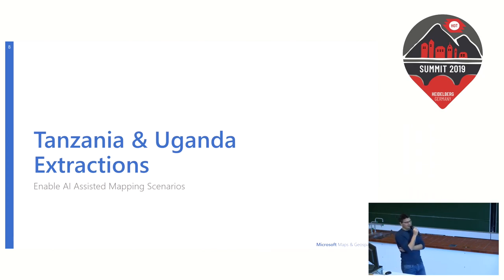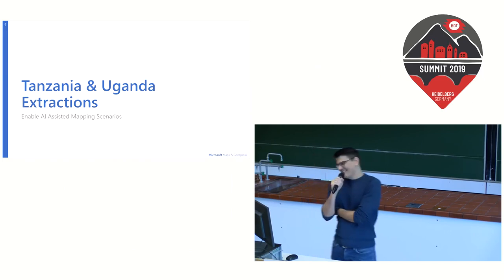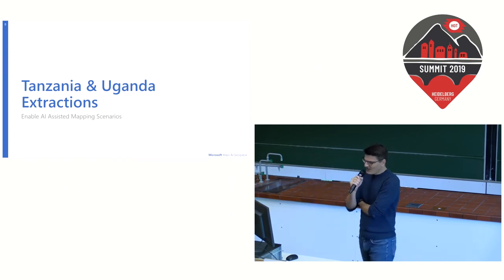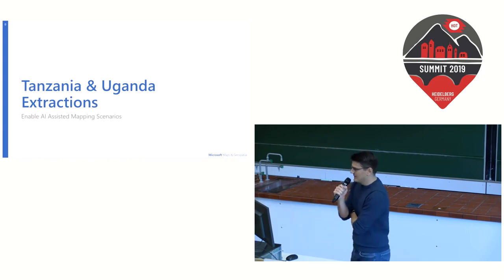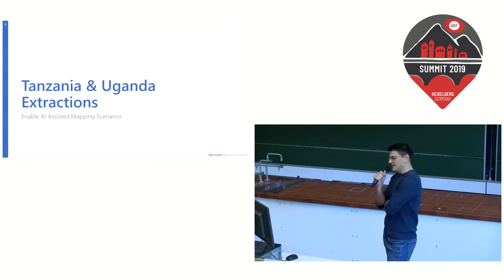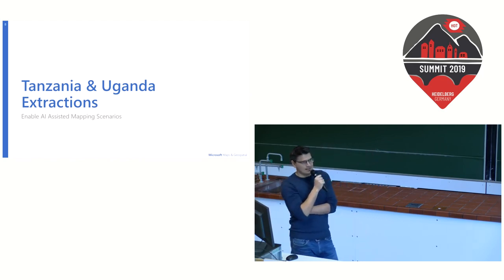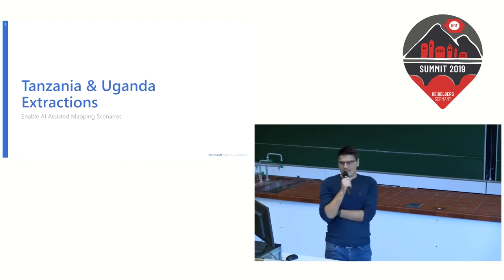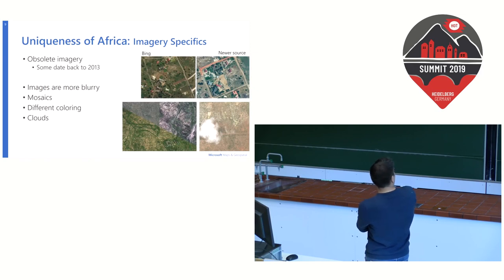This brings us to the Tanzania and Uganda extractions. This project was started by Jubal — he's no longer at Microsoft but we still love him. Our goal was to help HOT, knowing that Tanzania and Uganda are high priorities and that a lot of good quality data had been created. We wanted to use that data to create extractions for these areas and also to help HOT in its AI-assisted mapping efforts, which they are experimenting with.